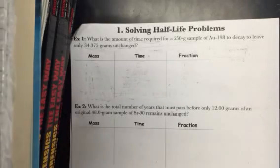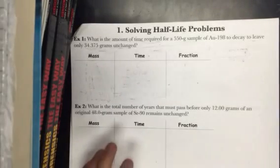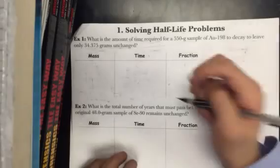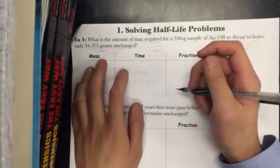So in example 1 it says, what is the amount of time required for a 550 gram sample of AU-198 to decay to leave only 34.375 grams unchanged?